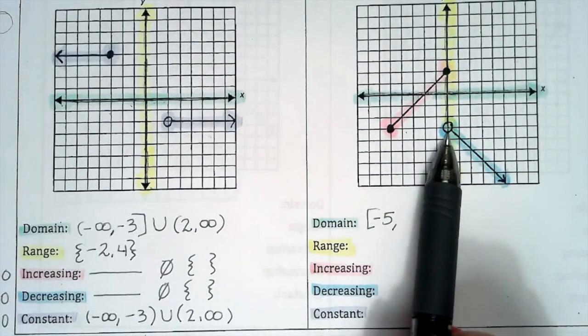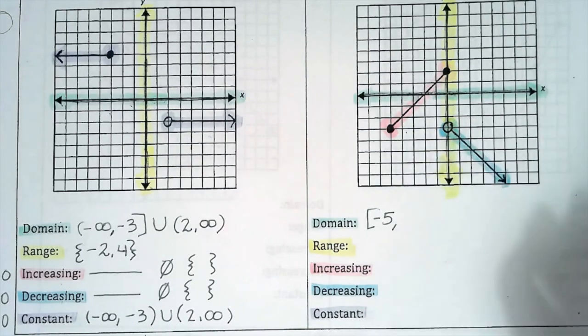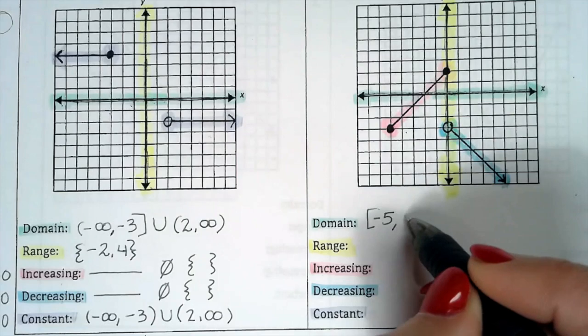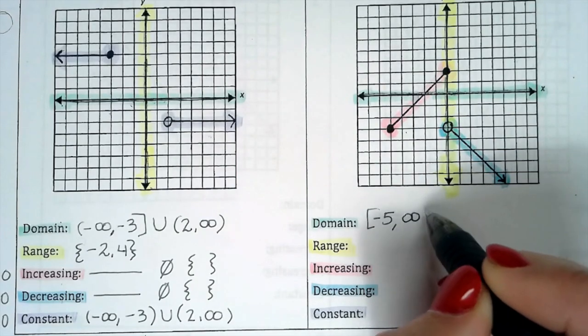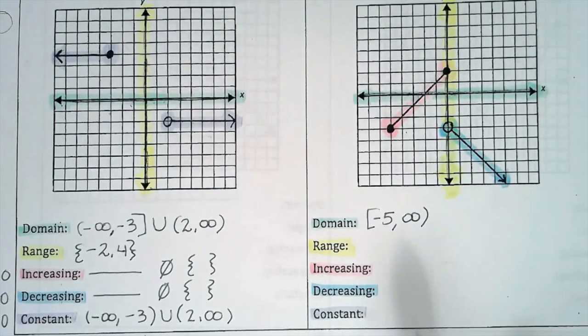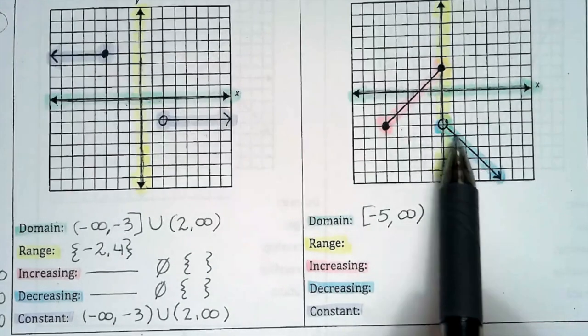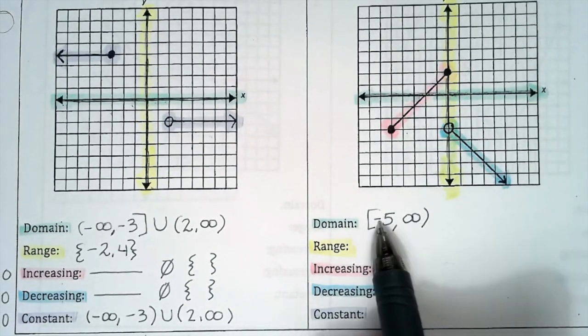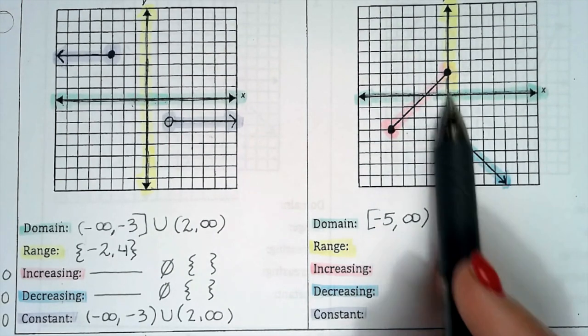If these were both colored in, it would not be a function because it would fail the vertical line test. This one being closed and this one being open means that the domain continues all the way until infinity, even though this is what we would call a discontinuous function, because you have to pick up your pen or pencil to draw it, but the domain is continuous itself because every x value is being used. The function's not continuous.